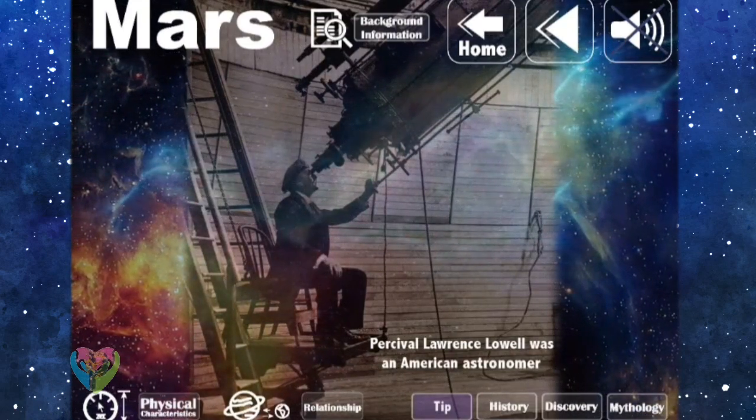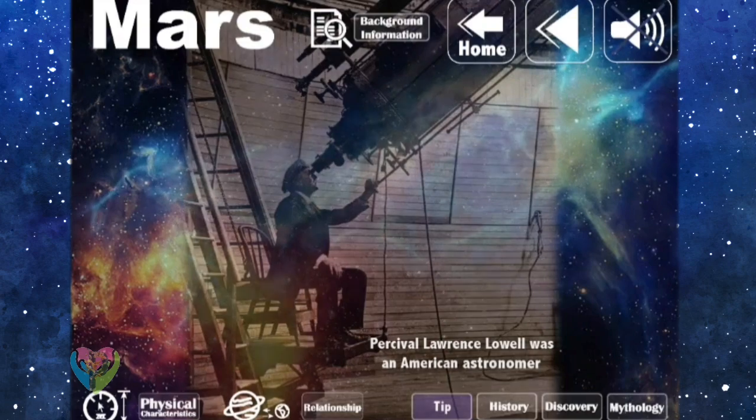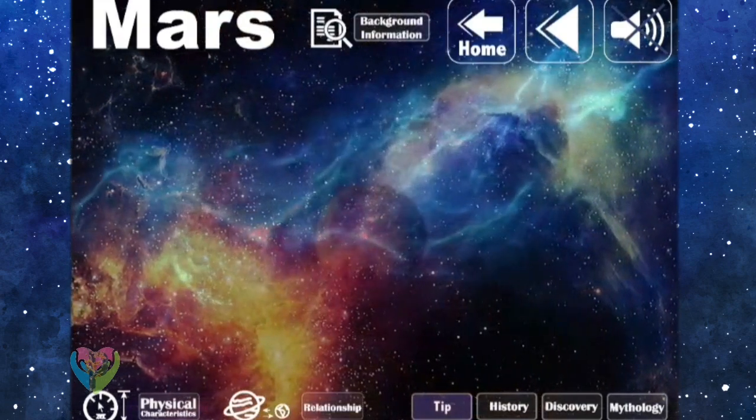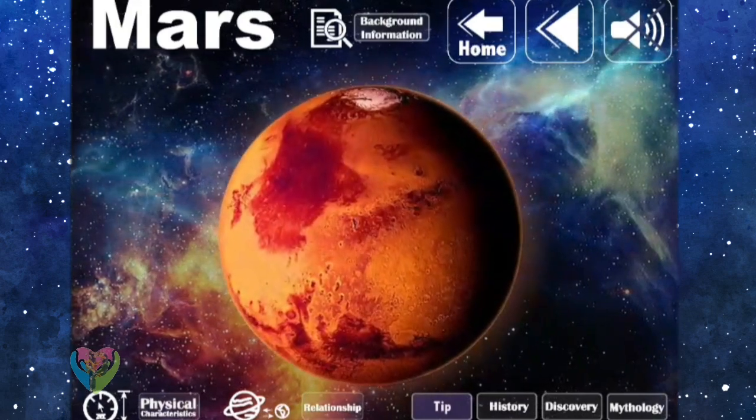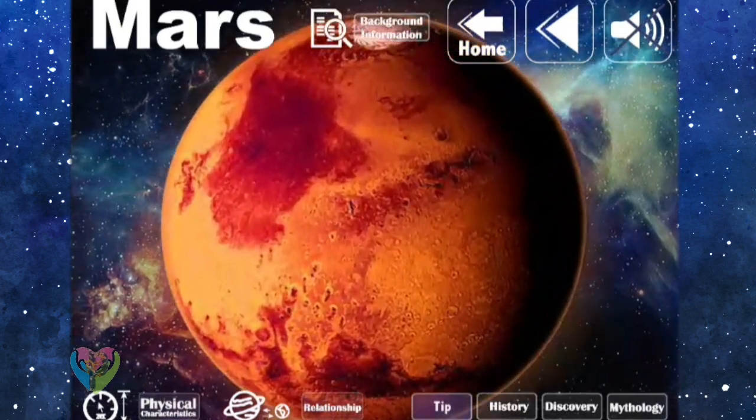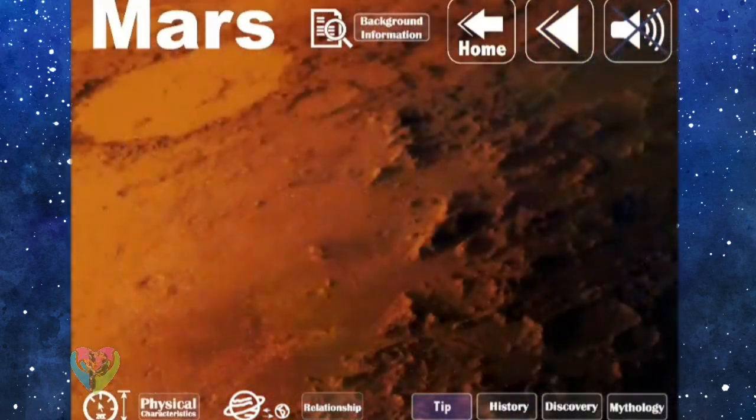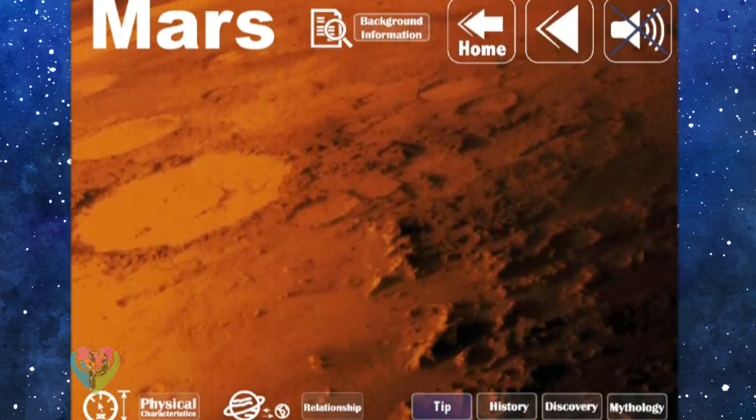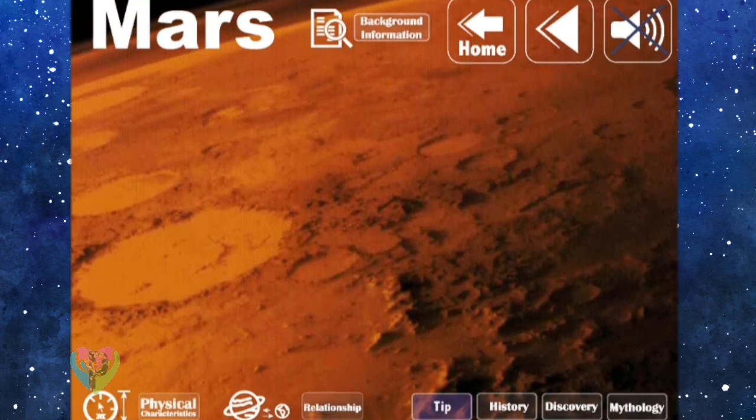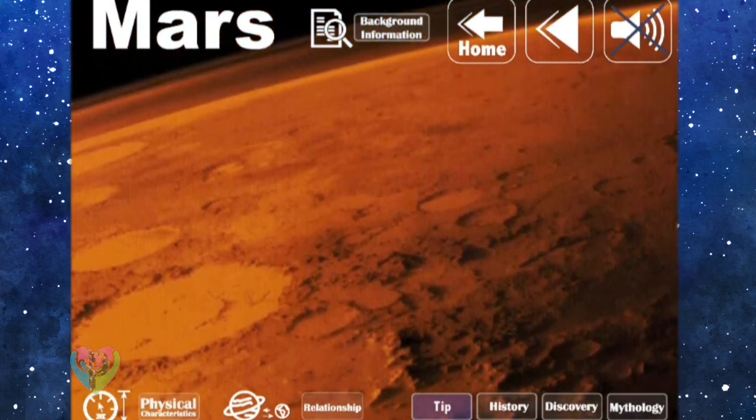Later on, when the astronomers used better quality telescopes, they could not find the canal on Mars. But the villagers still kept their belief about the Martians. And until the space age, it is clear that there is no canal on Mars. The surface of Mars has holes, hills, mountains, and craters, as well as grooves as there were water flows before.